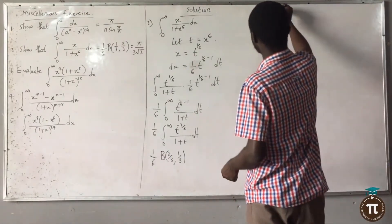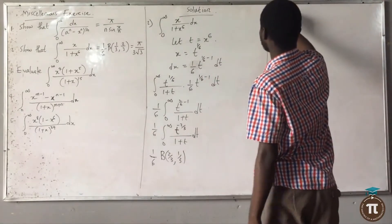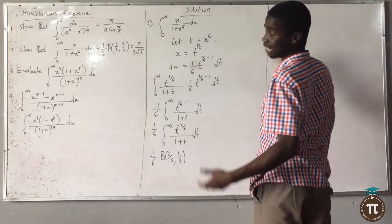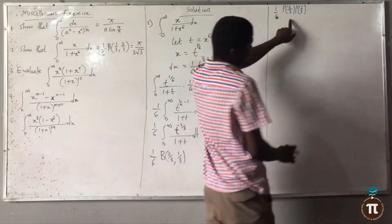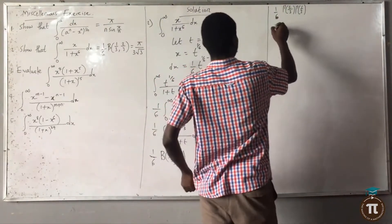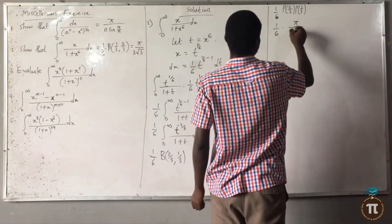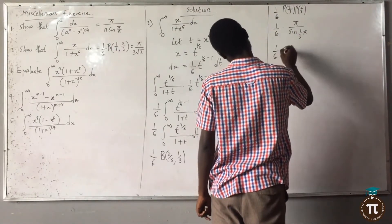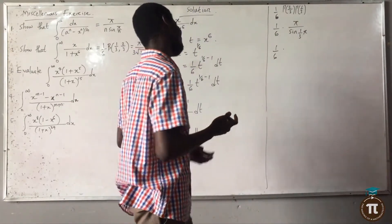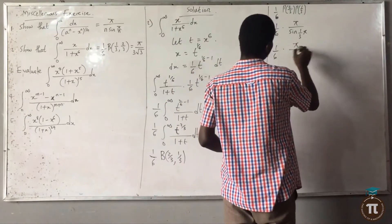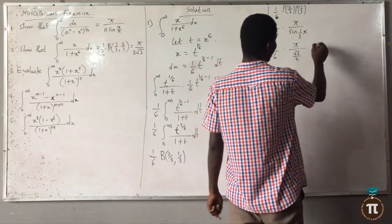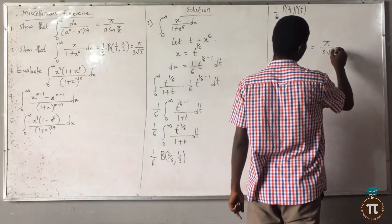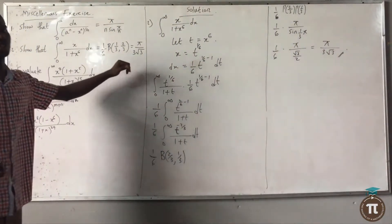So I have 1/6 times gamma(2/3) times gamma(1/3) over gamma(1). Gamma(1) is 1. Using gamma(p)·gamma(1-p) equals π/sin(pπ) with p equal to 1/3, this is 1/6 times π over sin(π/3). Sin(π/3) equals sin(60°) equals √3/2. So the answer is π/√3.